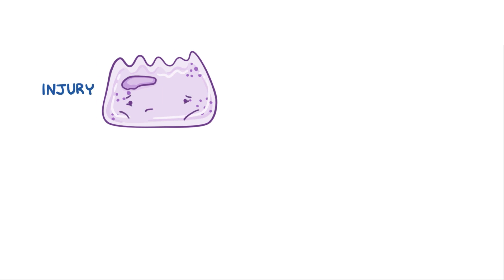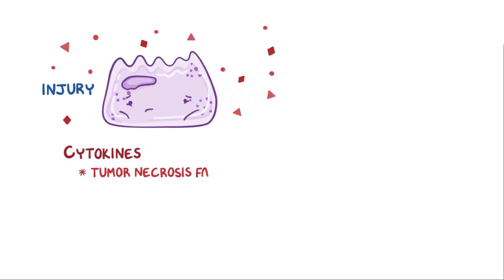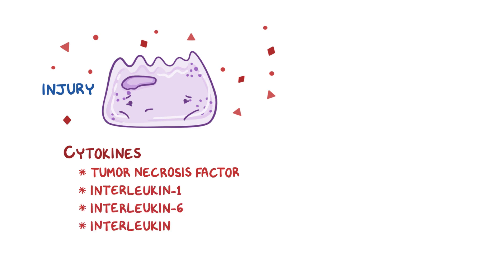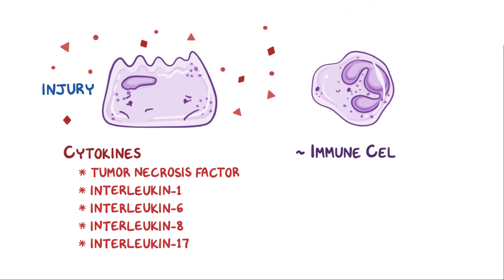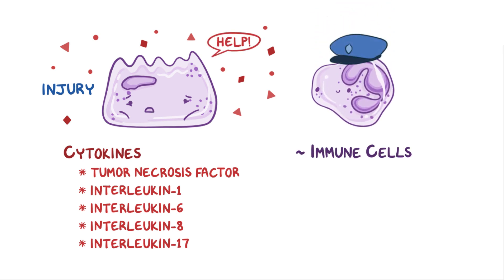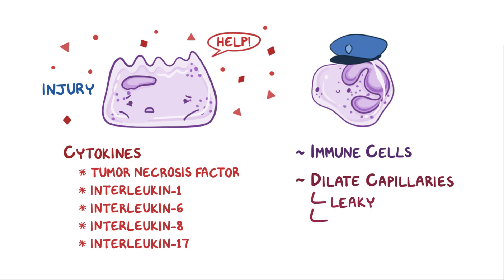In response to an injury, cells release small chemicals called cytokines, like tumor necrosis factor, interleukin-1, interleukin-6, interleukin-8, and interleukin-17, and these attract nearby immune cells — kind of like yelling for help and being heard by the nearby police. In addition, the cytokines also dilate nearby capillaries and make them leaky, which brings more blood to the site and allows immune cells to easily slip out of the blood and into the tissue.